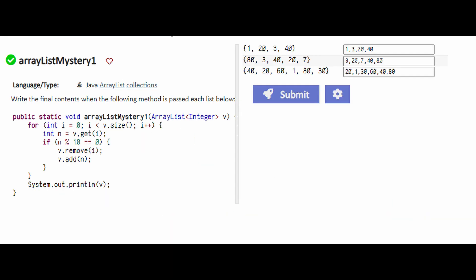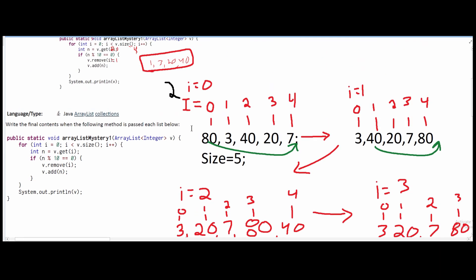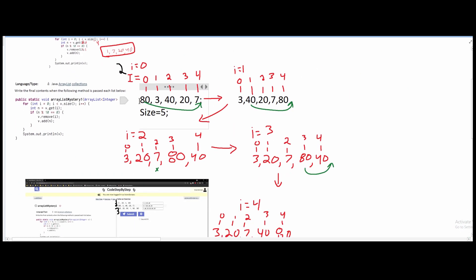For the second one, we are asked to solve this with the integers 80, 3, 40, 20, and 7. To do this, we are going to look at this right here. So we look at the first index, which is 80, because we're starting at index 0.